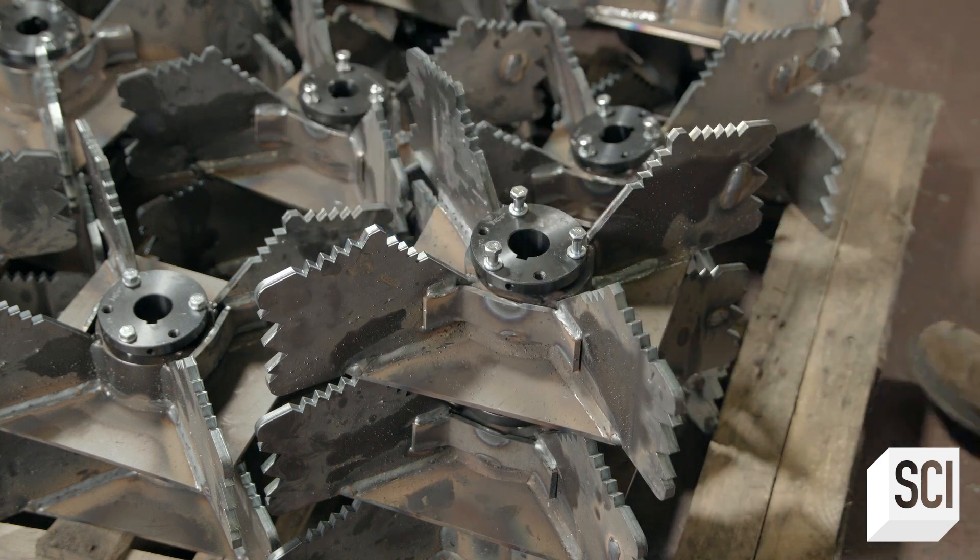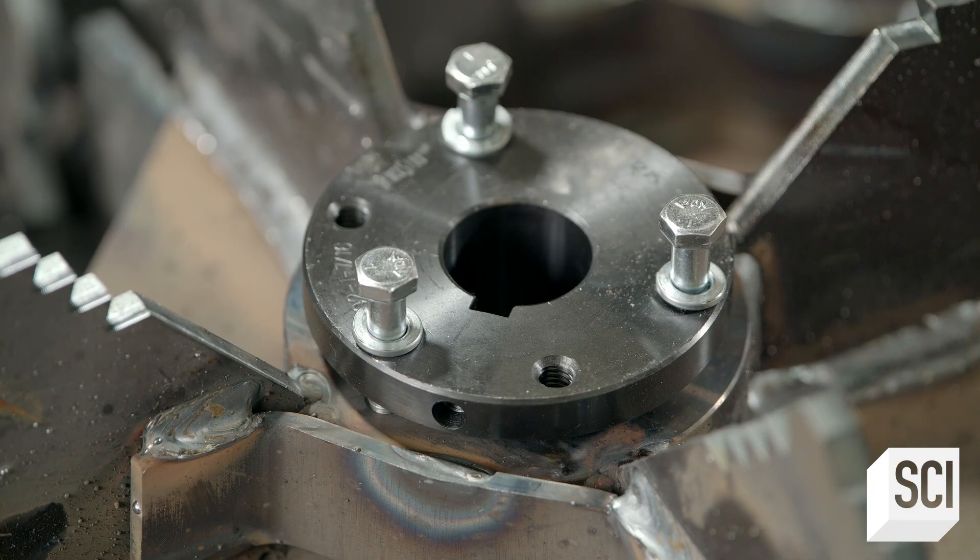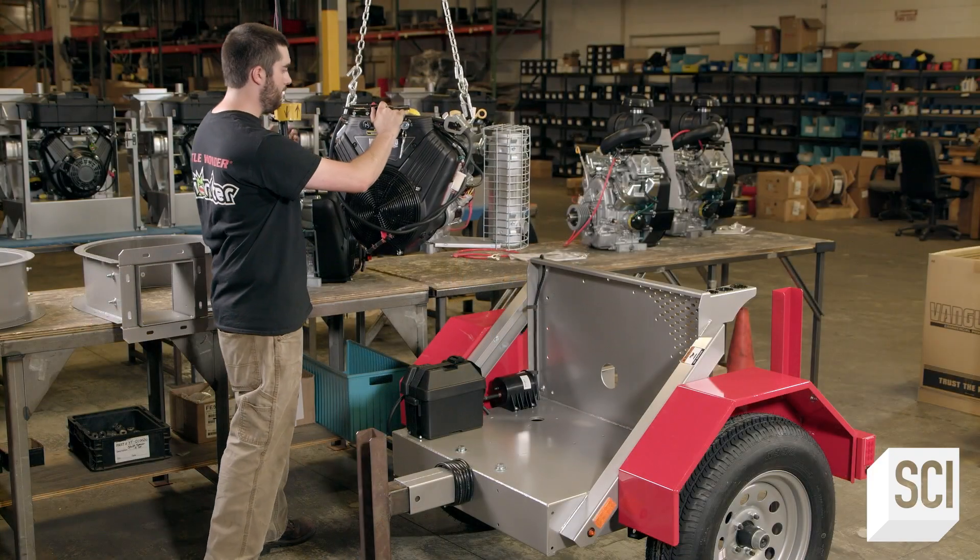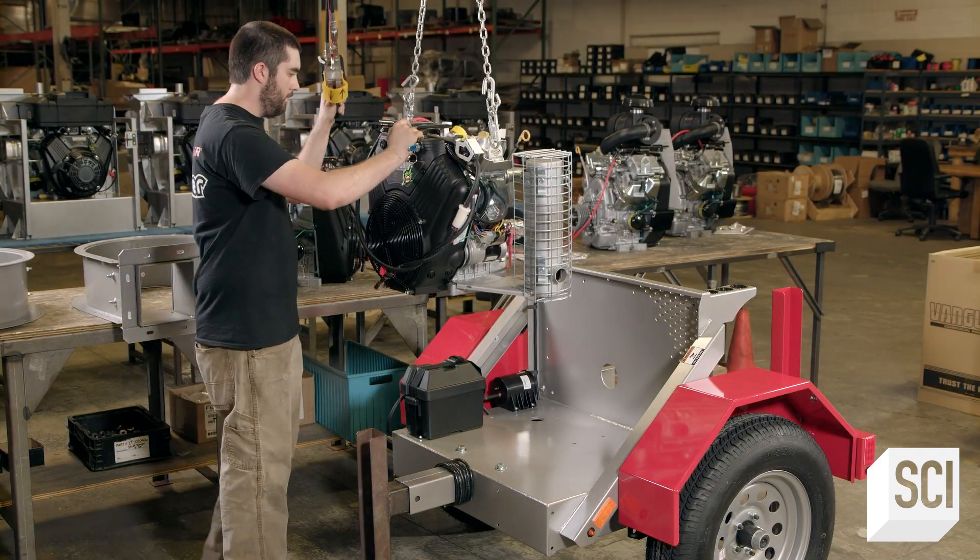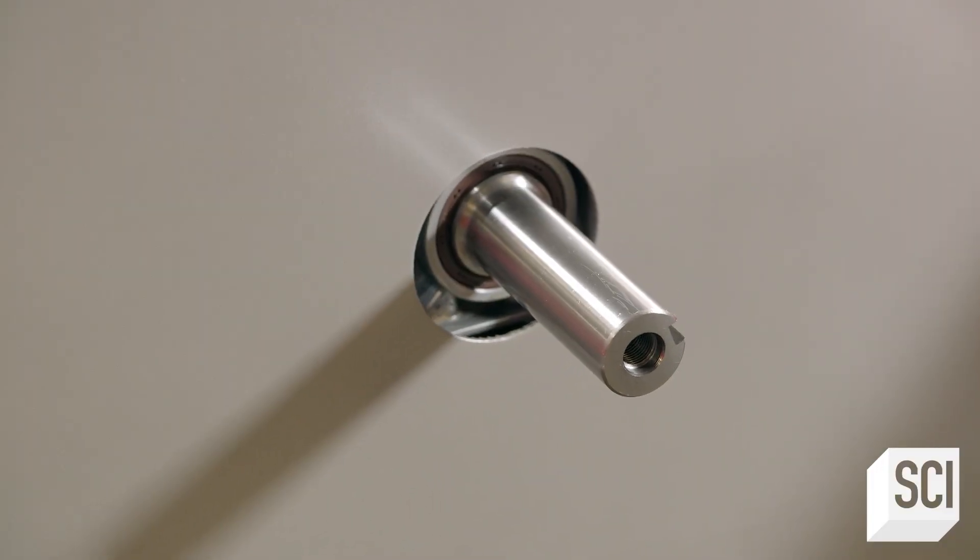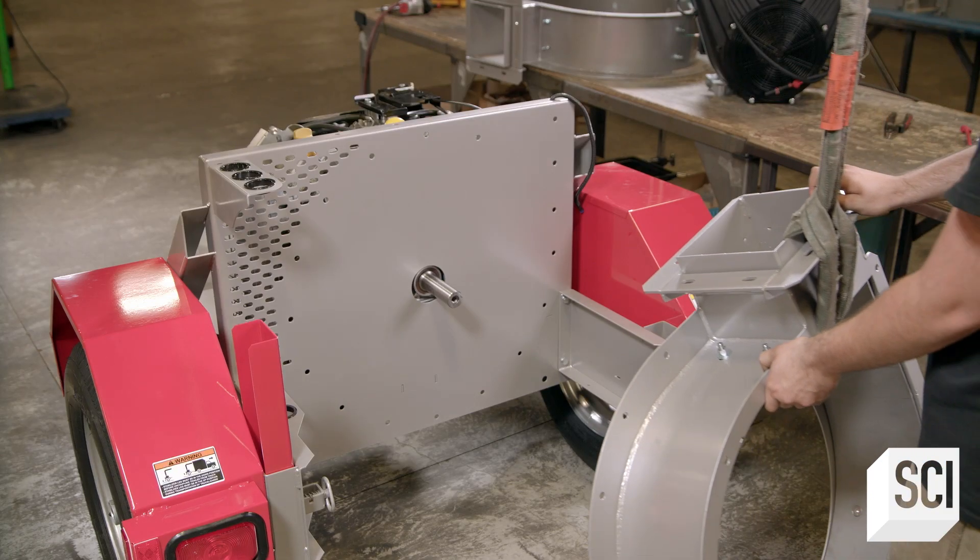He removes the simulated crankshaft. Meanwhile, an assembler mounts the 29-horsepower gas engine to the engine deck of the trailer frame. The crankshaft pokes through a hole in the frame's faceplate.